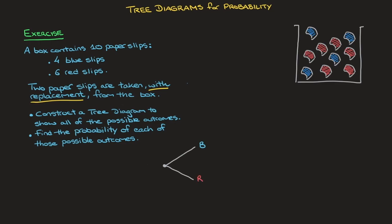Now before even thinking about the second paper slip, we need to write the probability of each of these two possible outcomes for our first paper slip. Remember, there were 10 paper slips in total, and the number of blue paper slips was 4. Consequently, the probability of picking a blue slip would be 4 out of 10, or 0.4. I write that probability along the side of the branch going from the starting point to the outcome B — I write 4 over 10 right there.